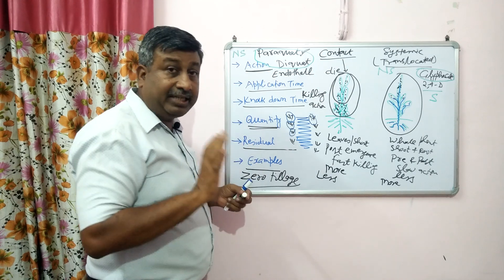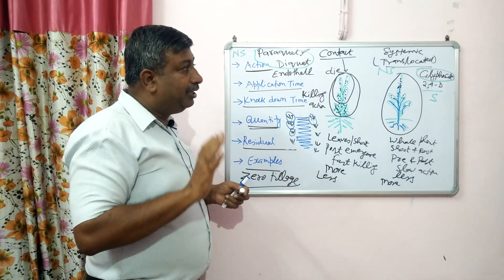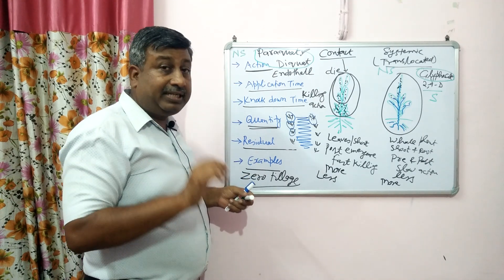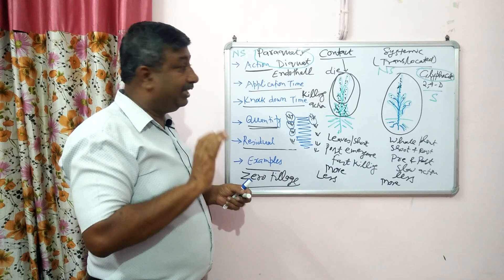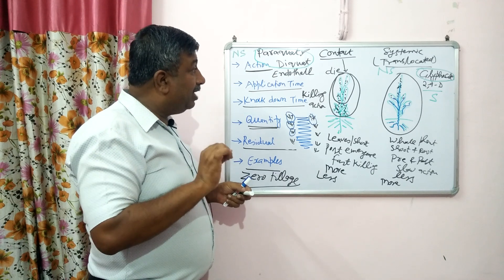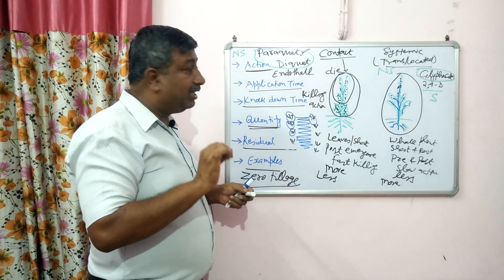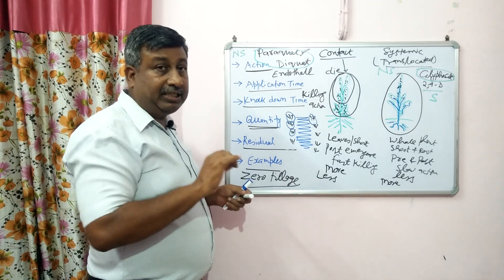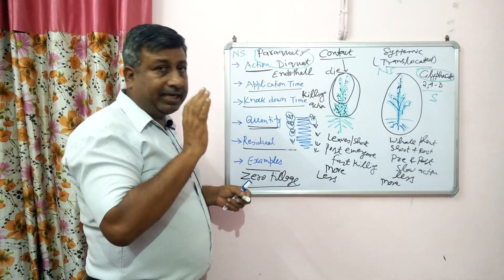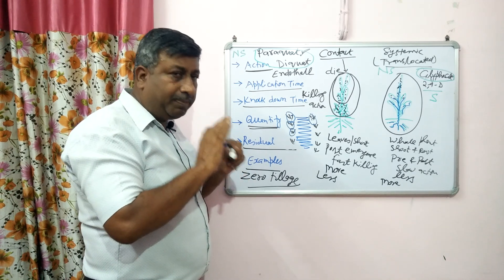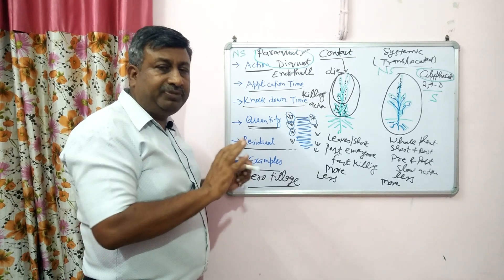Many herbicides are selective, but glyphosate is non-selective. So glyphosate is a non-selective systemic herbicide. Paraquat is a non-selective contact herbicide. Diquat is a non-selective contact herbicide. Remember and do not be confused.